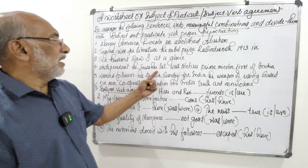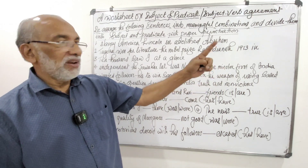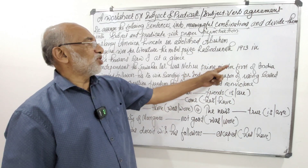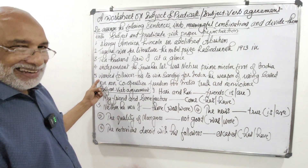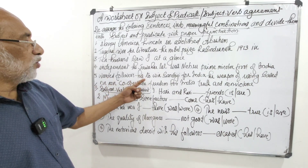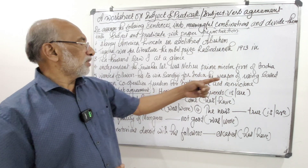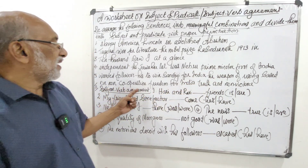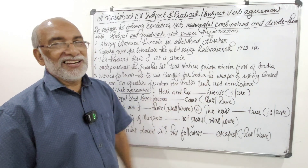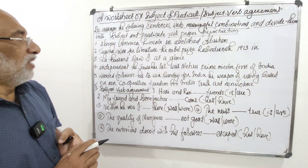The fourth sentence: 'the Jawaharlal was Nehru prime minister first of India independent' — rearrange it. The fifth one is a comparatively longer one: 'wondered followers is to win Gandhiji for India the weapon of using based on non-cooperation freedom for India truth and non-violence' — a little difficult, but with patience you can work it out.